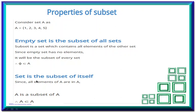Another property is that every set is the subset of itself. By the definition of subset, we should have all the elements present in another set. So all the elements of A are in A, which means A is the subset of A. That way we can say every set is the subset of itself.